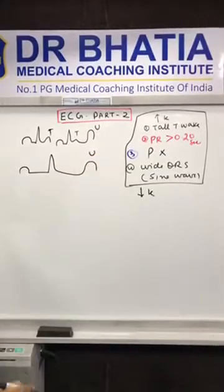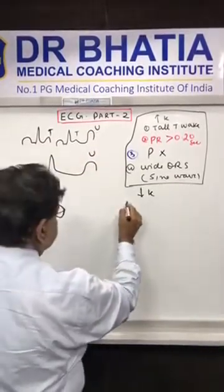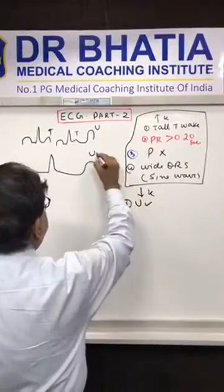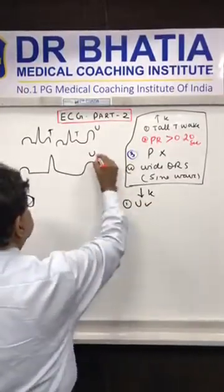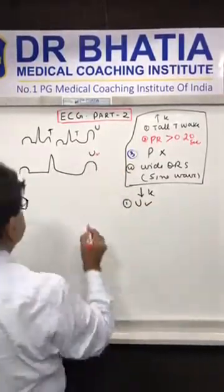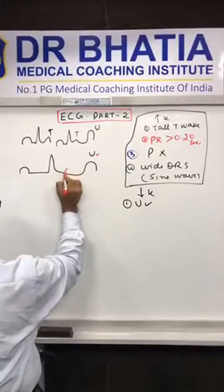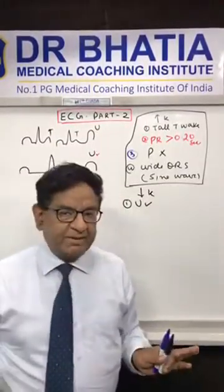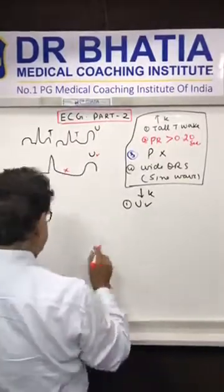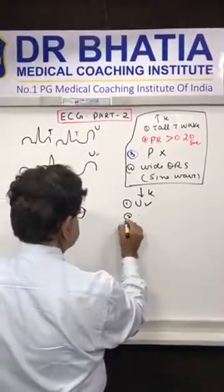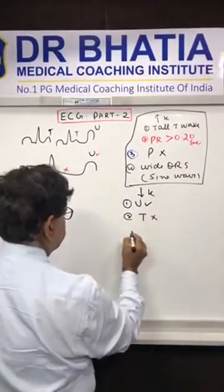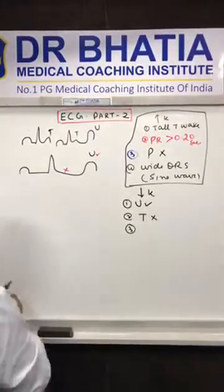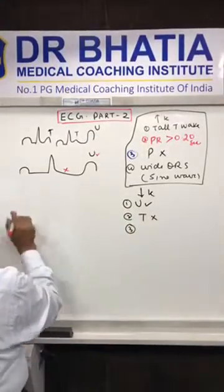In the advanced stages, the U wave appears. And the T wave — there is no T wave — the T wave has completely disappeared. So the second finding is T wave disappears.